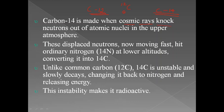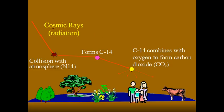The cosmic rays, which are highly energetic, can knock neutrons out of atomic nuclei in the atmosphere. These displaced neutrons, which are highly energetic and moving very fast, will hit ordinary nitrogen-14 present at lower altitudes, converting it into carbon-14. Cosmic rays fall onto the atmosphere, activate some nuclei to emit high-energy neutrons, and these neutrons on colliding with nitrogen-14 will form carbon-14.